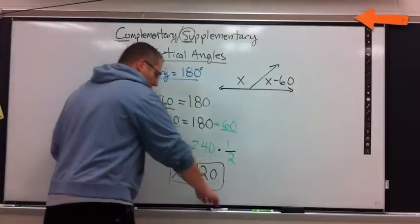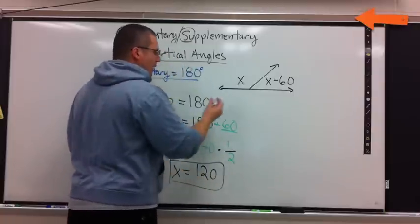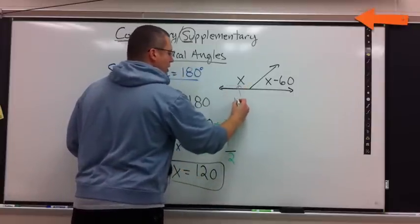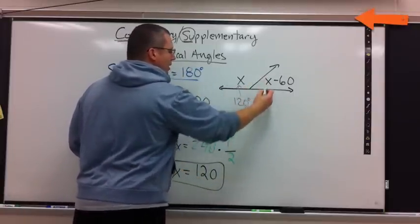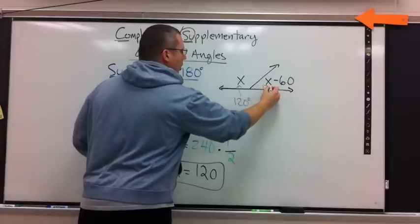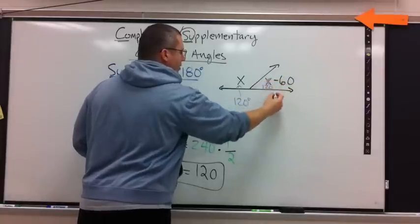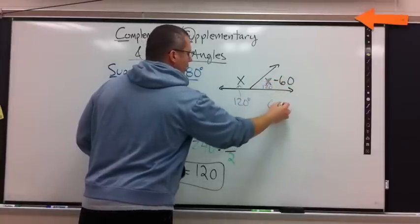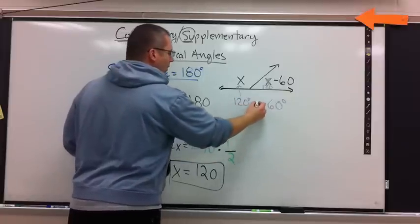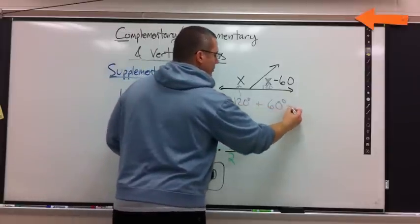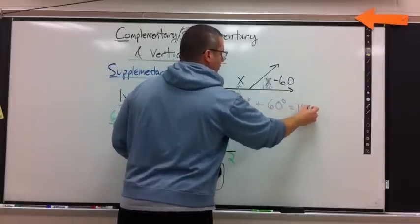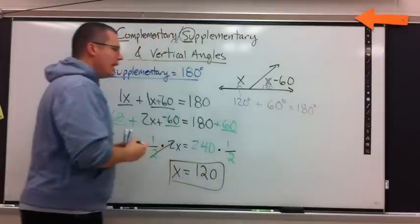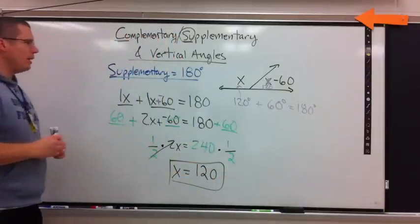If I need to, I can go back to my problem. X is 120. That means this side is 120 degrees. This side is 120 minus 60. Which is 60. How do I check? Add them up. And I should get 180 degrees. Again, fill in.